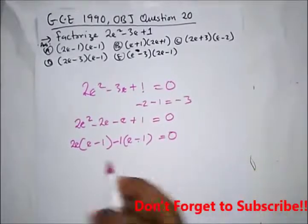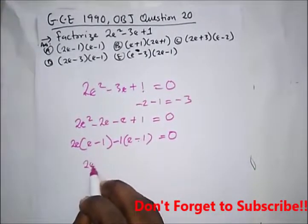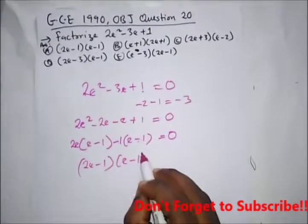So we have equal to 0. So here we have 2e minus 1 bracket e minus 1 equal to 0. And the right option here is option a.